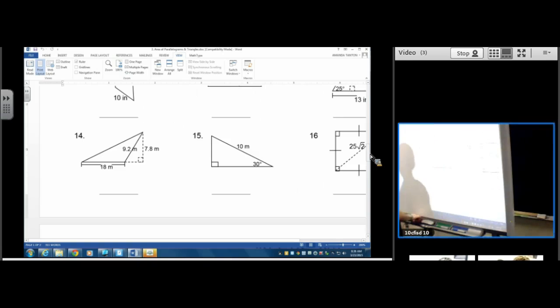So in this obtuse triangle, this is your base. And this is your height.